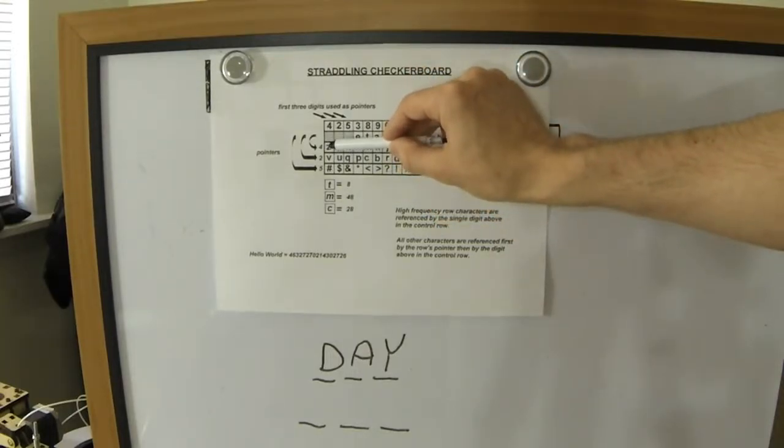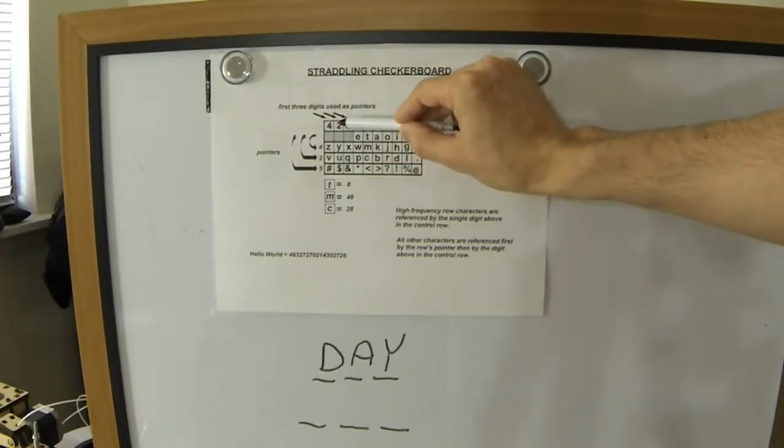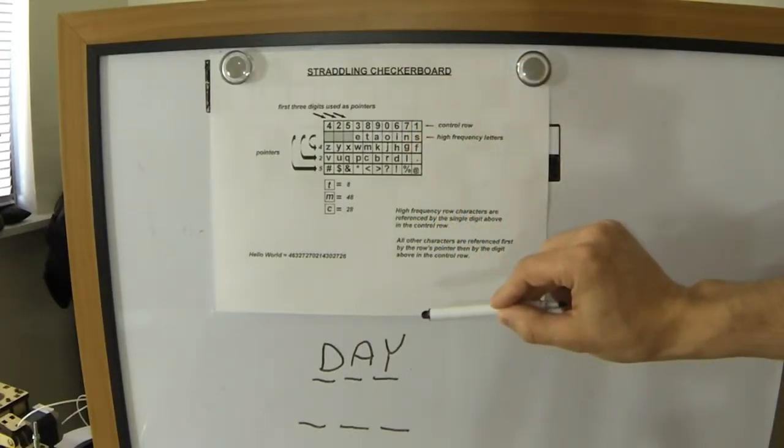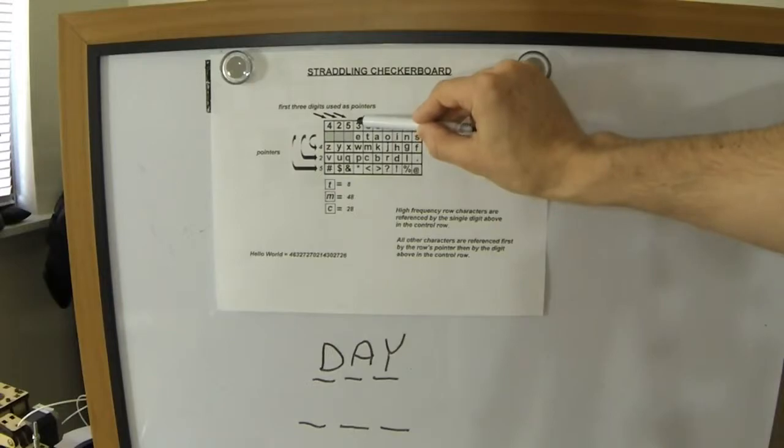So for instance, Z would be 4, 4. Y would be 4, 2. X would be 4, 5, and so forth. P would be 2, 3, 23.